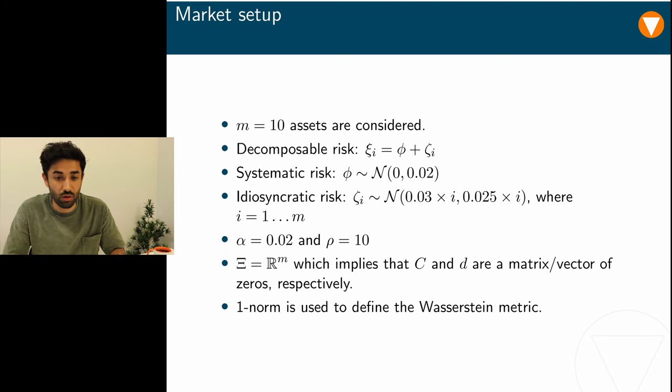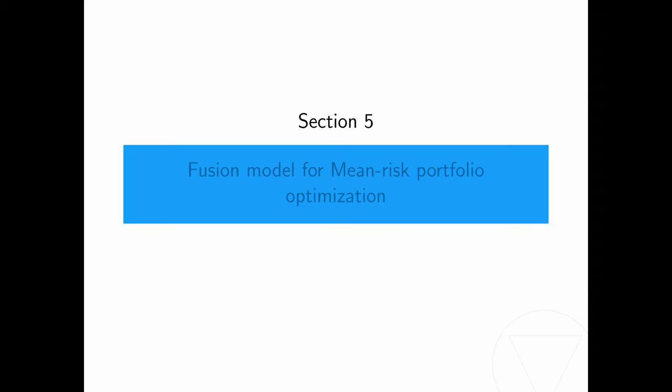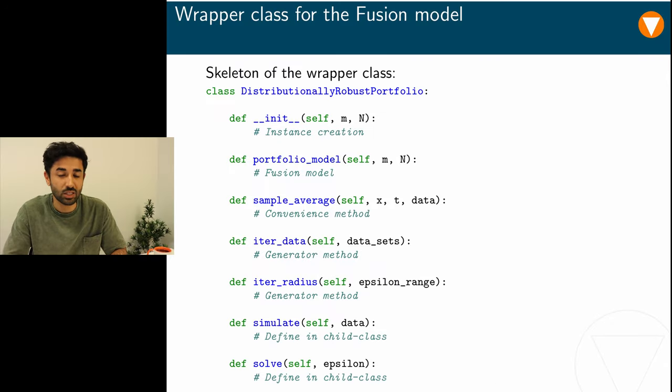Lastly, the authors use the 1-norm to define the Wasserstein metric. Using the last two assumptions stated above, the mean risk portfolio optimization model simplifies as shown. The key change is that we don't need to consider the variable called gamma anymore. This simplifies the problem considerably. Finally, we come to the implementation of the numerical models discussed above.